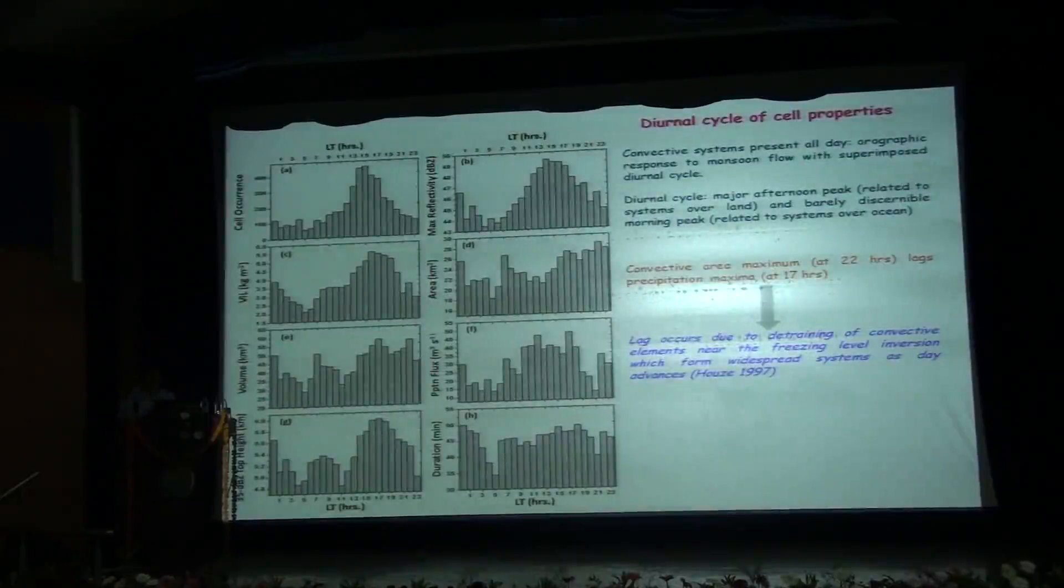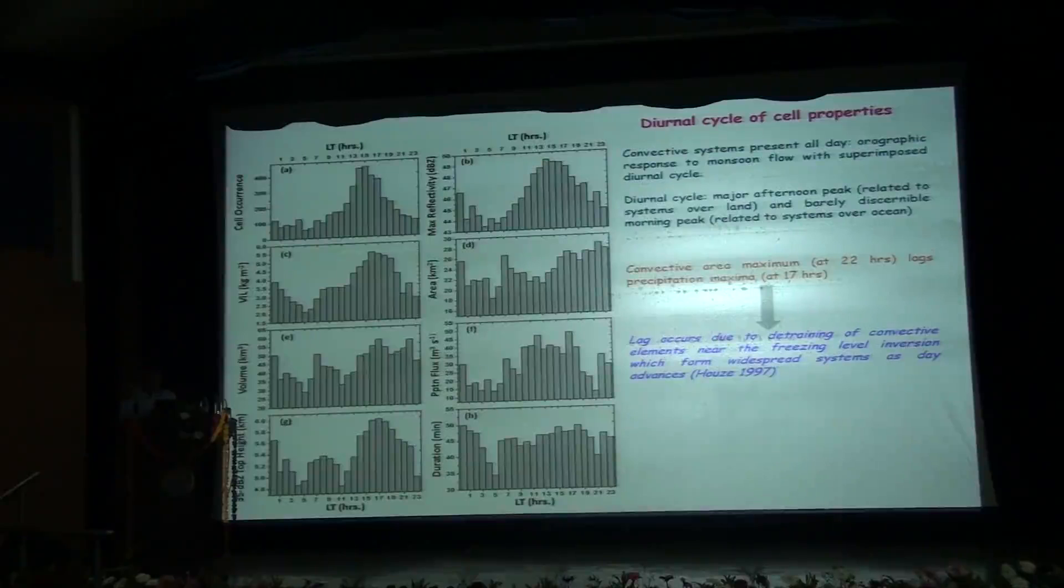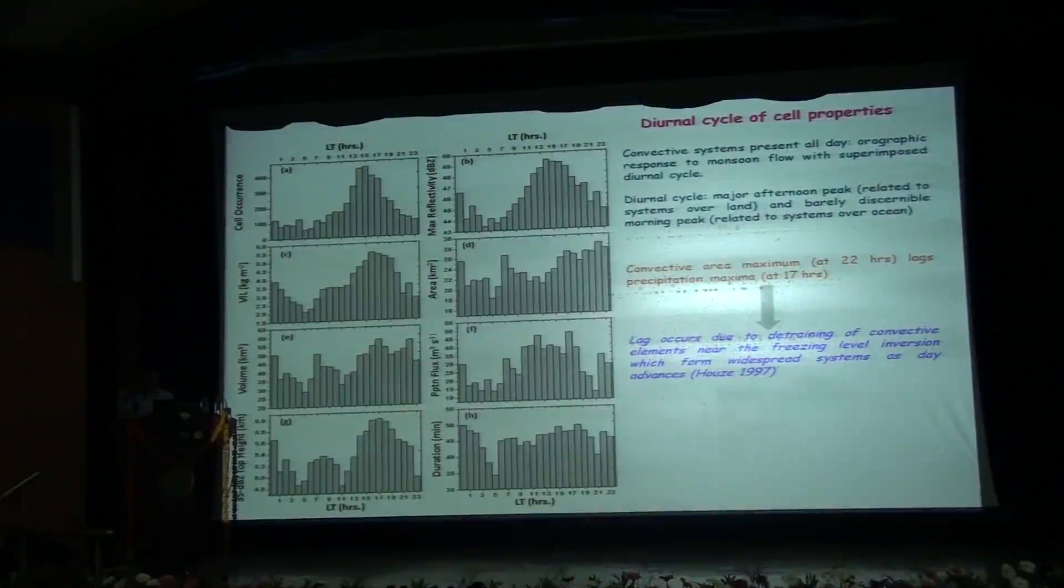The diurnal cycle of convection and precipitation over a region plays a fundamental role in framing the regional weather pattern. With that aim we looked into the diurnal cycle of different convective cell properties like the cell occurrence, the vertically integrated liquid, volume, top heights, reflectivity, area, precipitation flux, and duration.